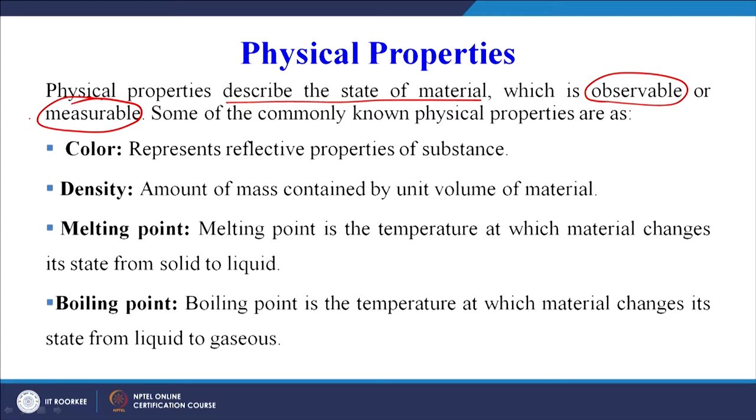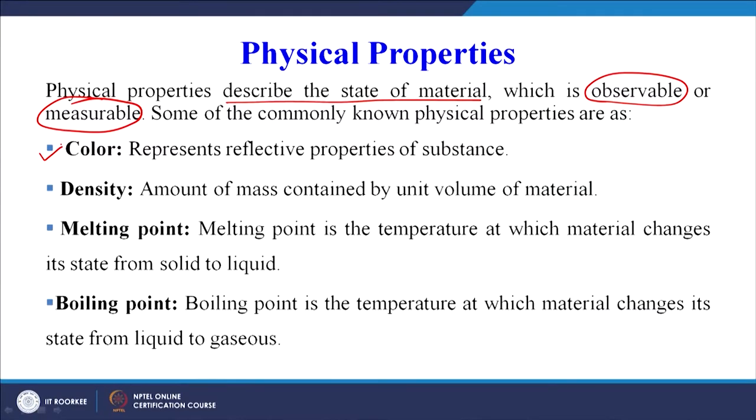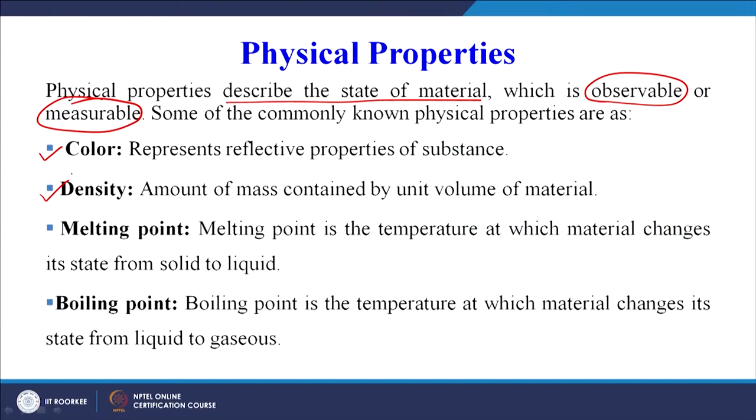Some of the commonly used physical properties: colour is one property that represents the reflective properties of a substance — we can easily grade the material based on colour, such as before and after treatment. Then density — the amount of mass contained by unit volume of material — is another very important physical property. When we are designing a product and we want it to be very light in weight, we have to understand which material can provide us a light-weight product, so we will compare the densities of different materials and select the material which has the density accordingly.